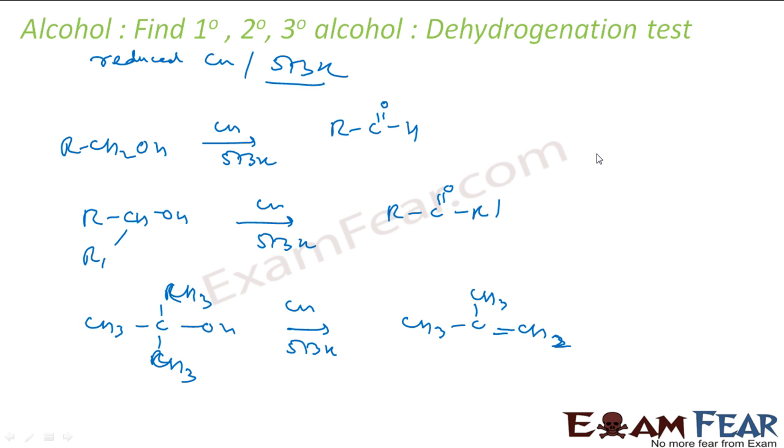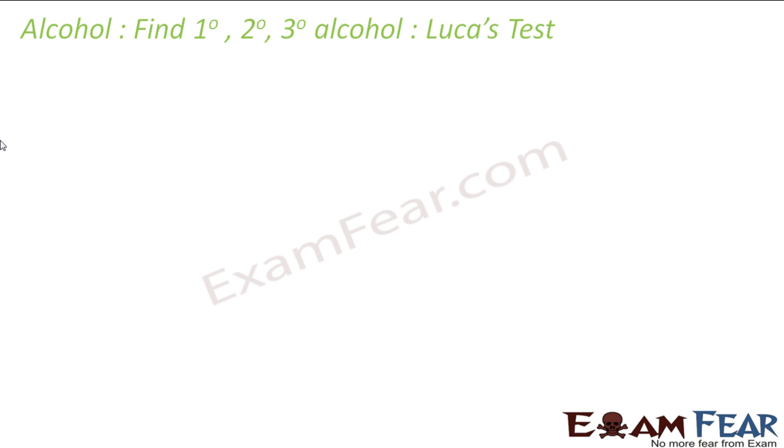So this is my aldehyde. This is my ketone. This is my aldehyde. This is my 1 degree, 2 degree, and 3 degree. So if you see, using my dehydrogenation test also, we can tell whether it is a primary, secondary, or tertiary.